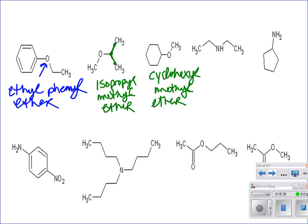Next practice problem in the middle: diethylamine. Then, making the substituent an NO₂ group instead of NH — that's a nitro group. On a cyclopentane ring, the compound is nitrocyclopentane. We don't need to put a '1' on it because it's a cyclo compound.